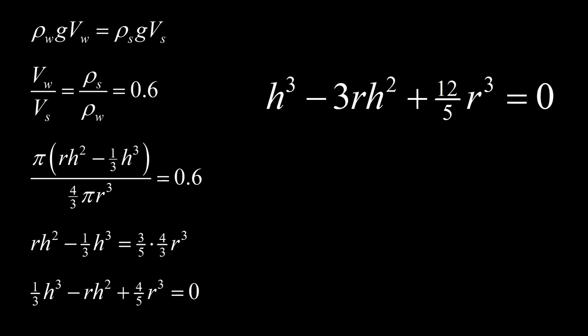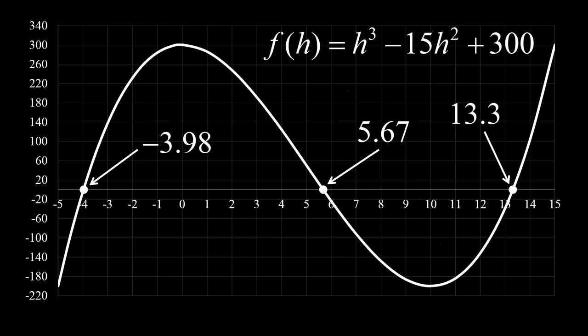We can go ahead and plot this function and see that it has three real roots. Having the advantage of foresight, we know that these roots are negative 3.98, 5.67, and 13.3. Isa lang sa mga to make sense. Ang hinahanap natin na h ay obviously hindi negative at hindi mas malaki sa diameter ng sphere. In other words, ang sagot ay 5.67 centimeters.